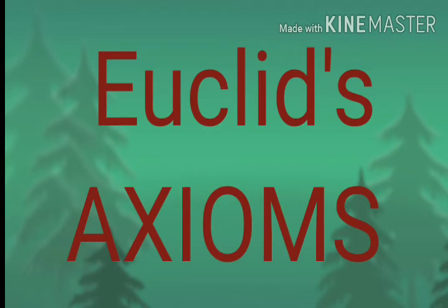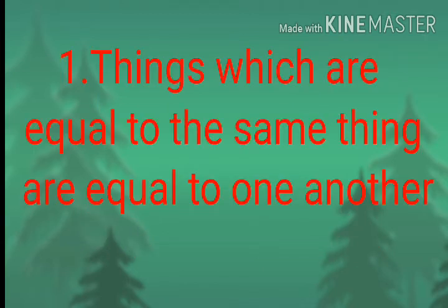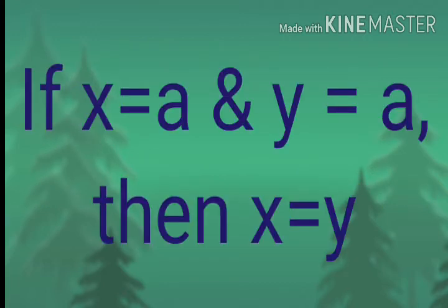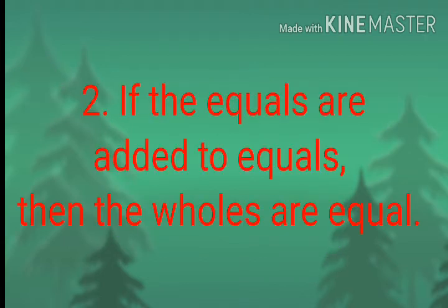Now Euclid's axioms. The first axiom is: things which are equal to the same thing are equal to one another. That means if x equals a and y equals a, then we can say x equals y. The second axiom is: if equals are added to equals, the wholes are equal. That means if x equals y, then x plus a equals y plus a.